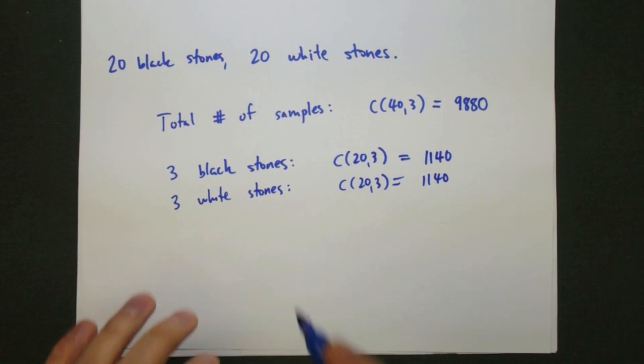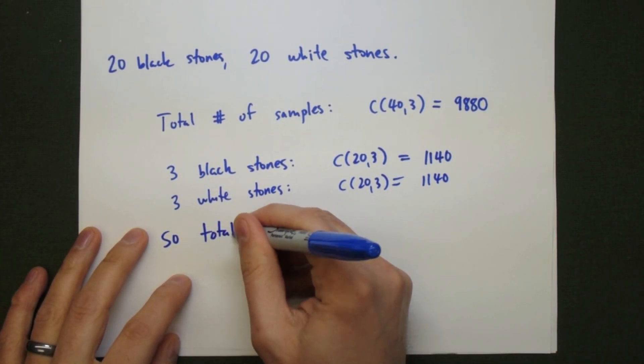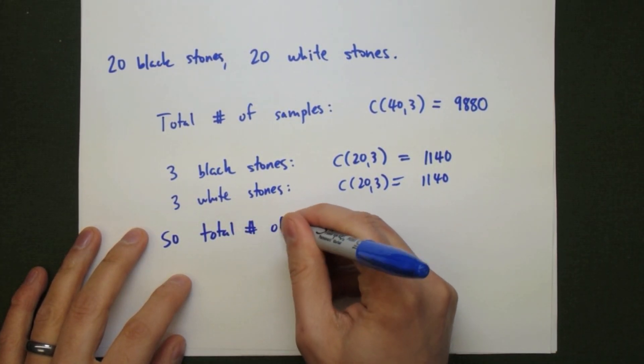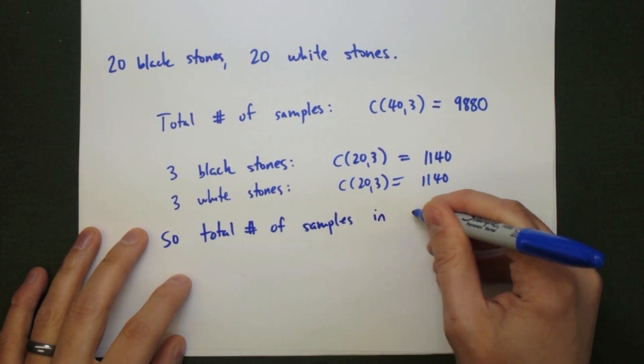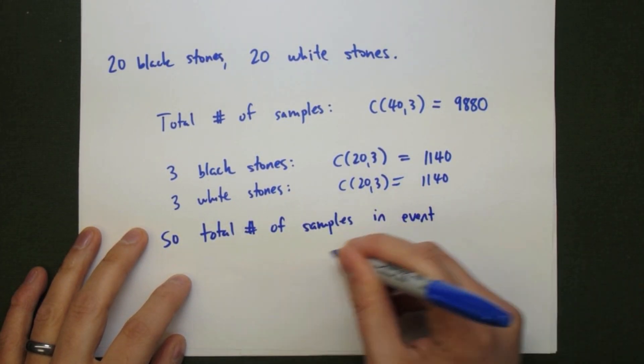The numerator then is going to be these two combined together. It'll be 1,140 plus 1,140 or 2,280. This will be the number of ways to get three stones that are the same color.